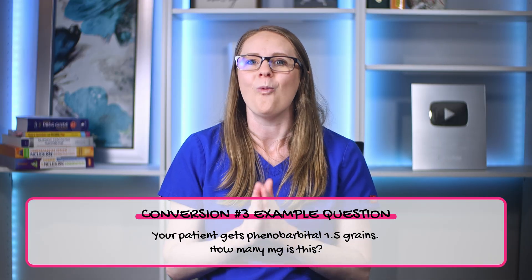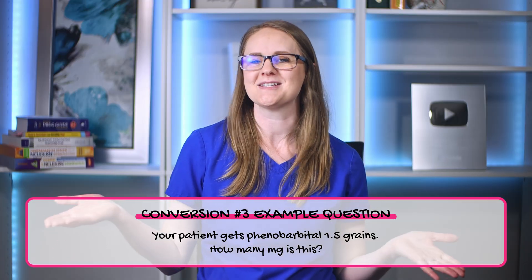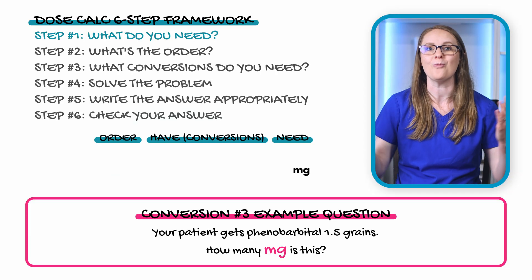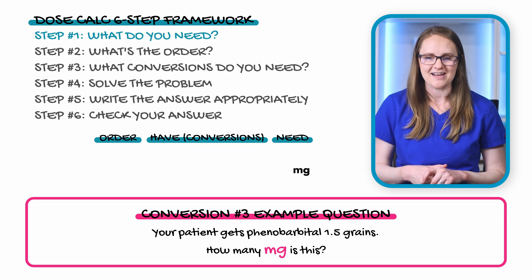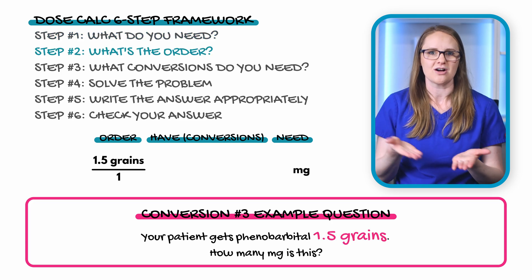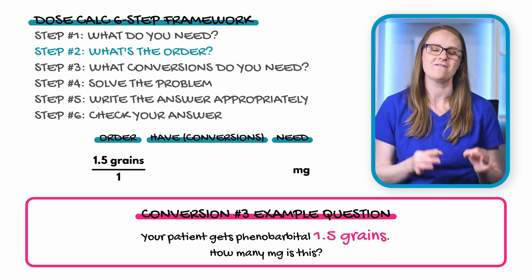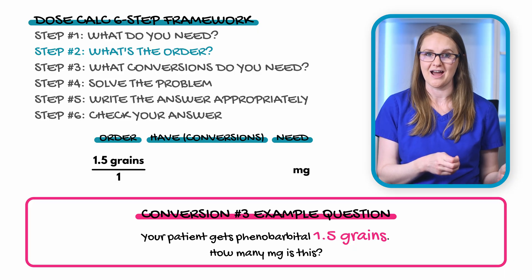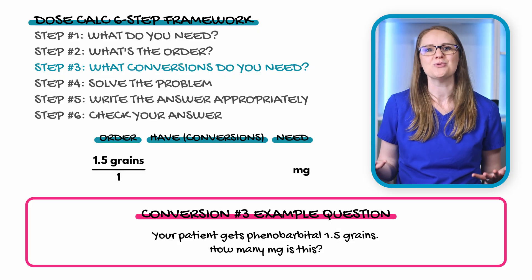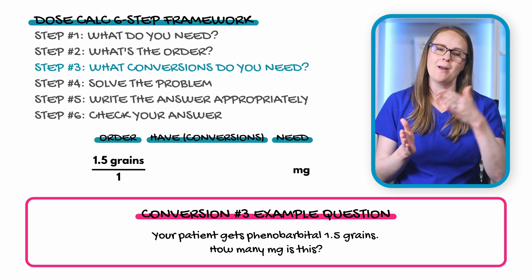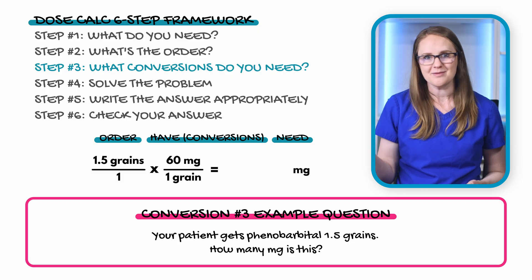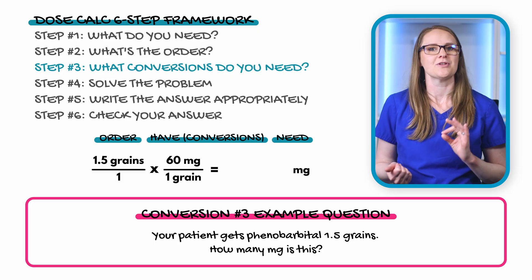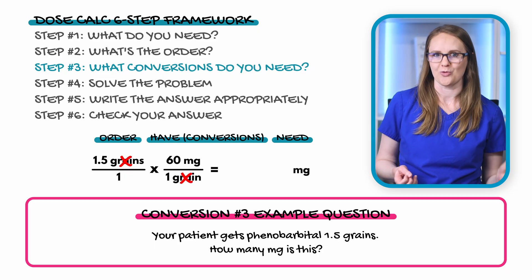Here's our practice question: your patient gets phenobarbital 1.5 grains. How many milligrams is this? Step one: we need milligrams. Step two: the order is 1.5 grains. Step three: since this is not about acetaminophen, aspirin, or iron, the conversion is 1 grain equals 60 milligrams.